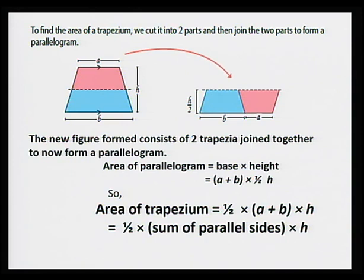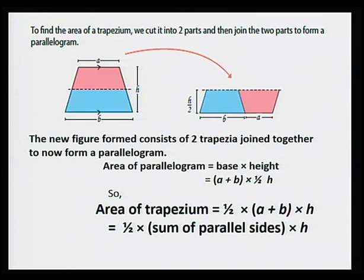The figure obtained on the right-hand side is a parallelogram with base A plus B. The height of the parallelogram is half that of the trapezium because we cut the trapezium into two equal parts. So here we have area equal to half H times (A plus B). It means that area of trapezium is equal to half times (A plus B) times H, where A and B are the parallel sides of the trapezium. So we write area of trapezium as half times the sum of parallel sides times height.